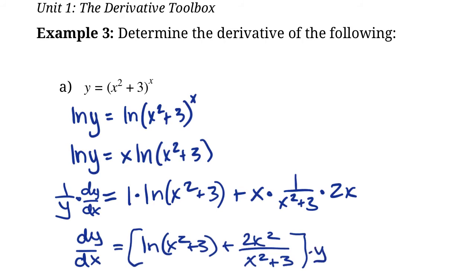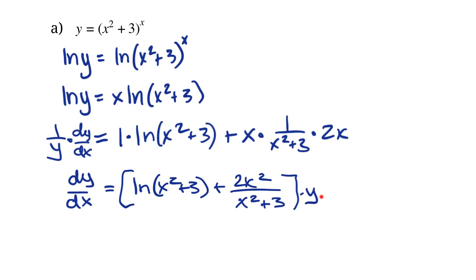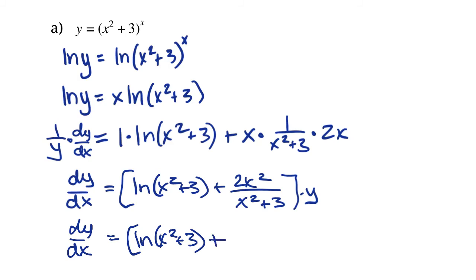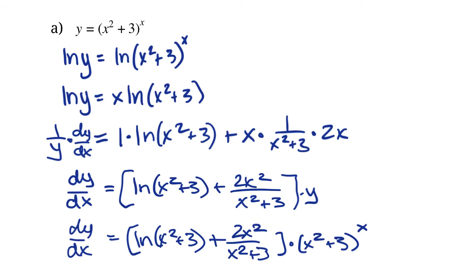Sometimes it's convenient to have only x's in our answer. We can rewrite this — substituting y back in as (x squared plus 3) to the power of x — so dy/dx equals ln(x squared plus 3) plus 2x squared over (x squared plus 3), times (x squared plus 3) to the power of x. This last step of replacing y with x isn't always necessary, especially if we're just plugging in values.